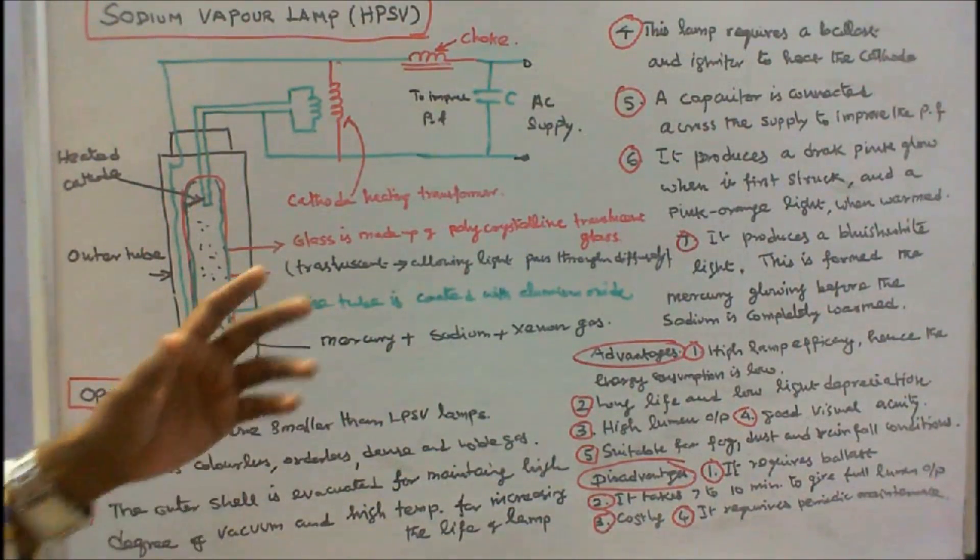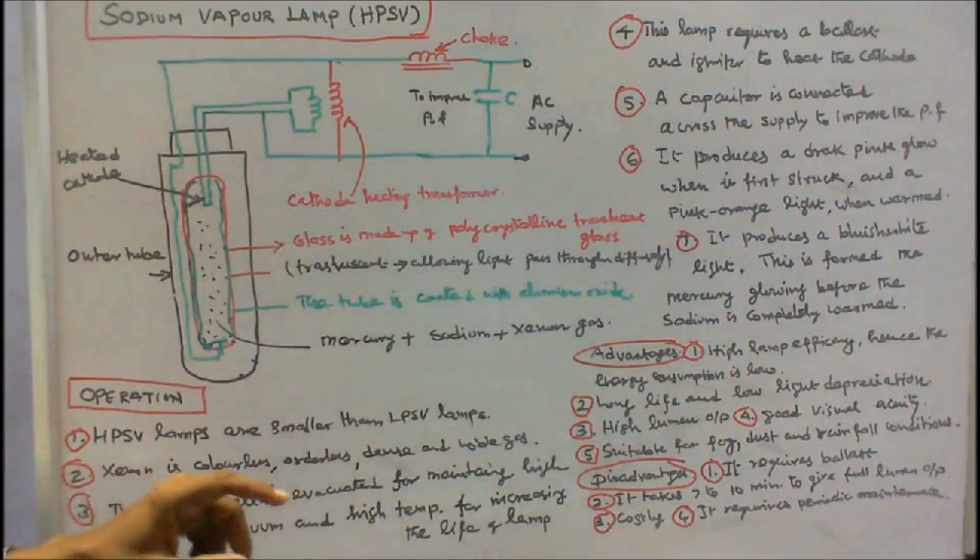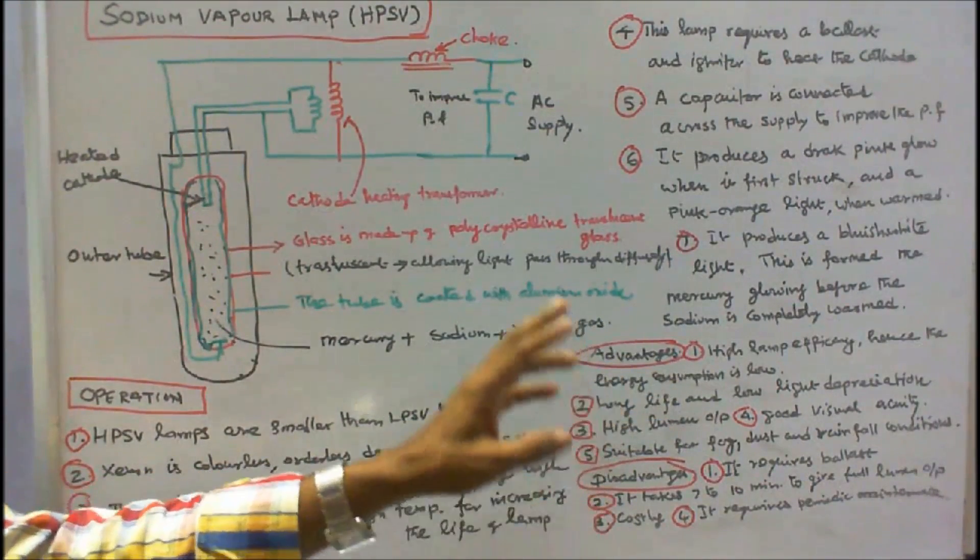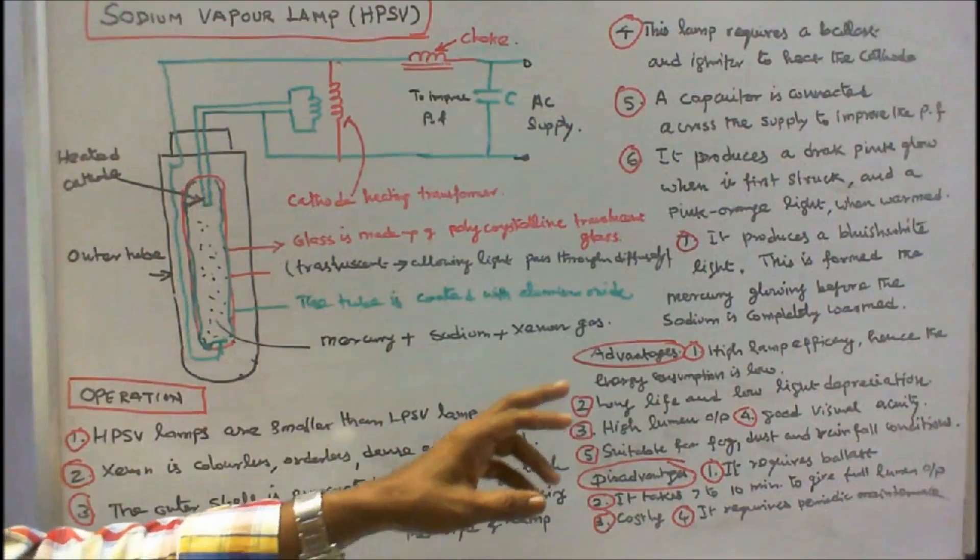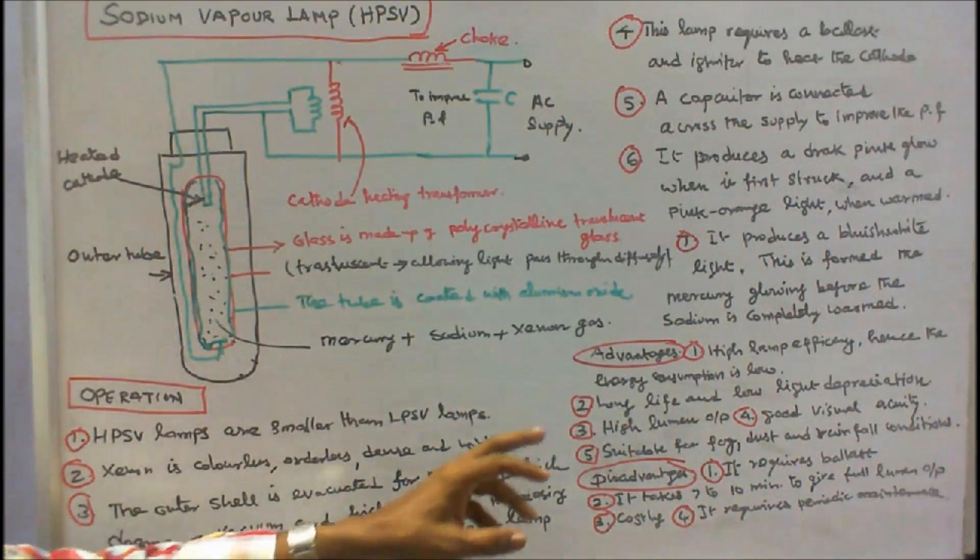Now we will see the advantages and disadvantages of high pressure sodium vapor lamp. 1. High lamp efficacy, hence the energy consumption is low. 2. Long life and low light depreciation. 3. High lumen output.